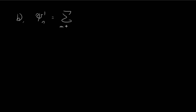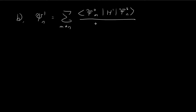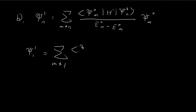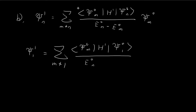Moving on to part b, we would like to find the first order correction to the wave function, which requires us to use the perturbation theory formula. This formula involves E_n minus E_m in the denominator and ψ_m states. In part b we're interested in the corrections to the ground state, where n = 1, and we want the first three terms of this expression.